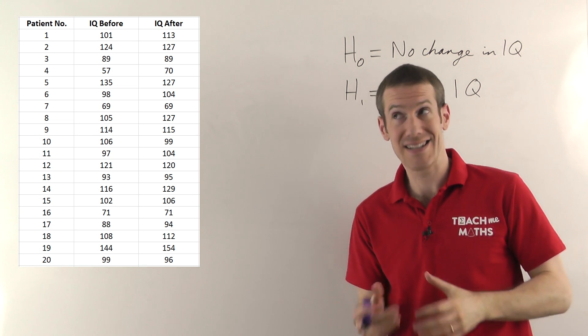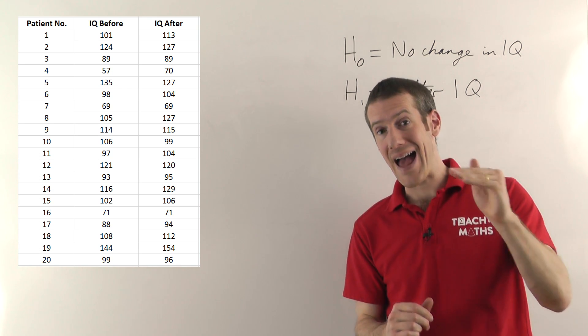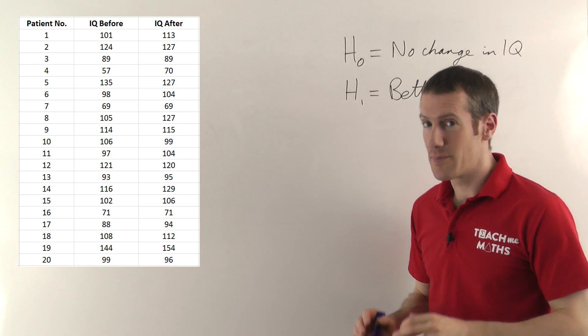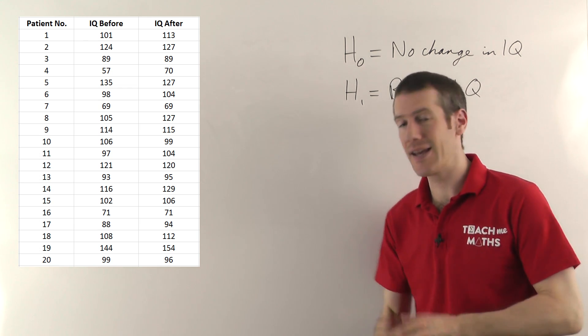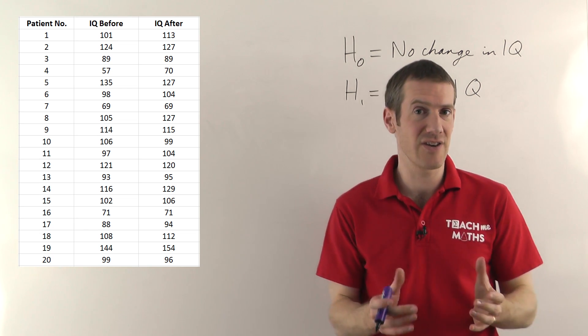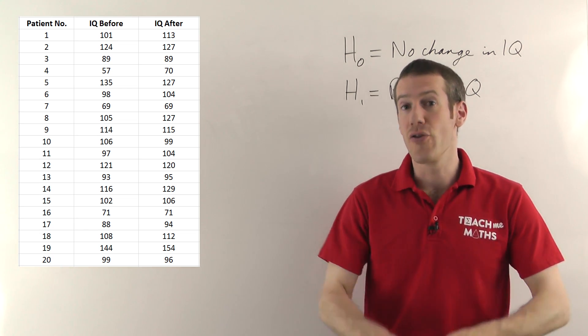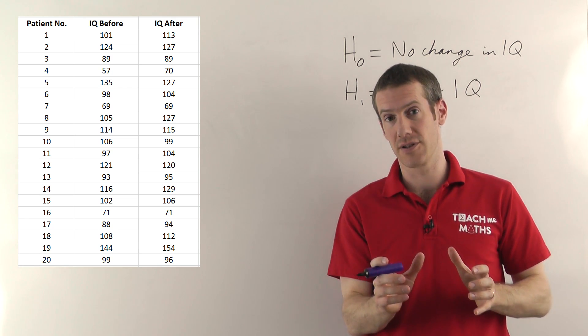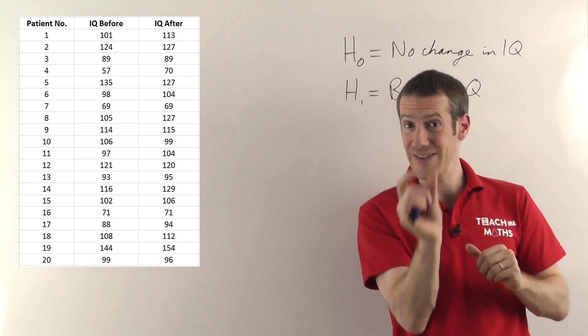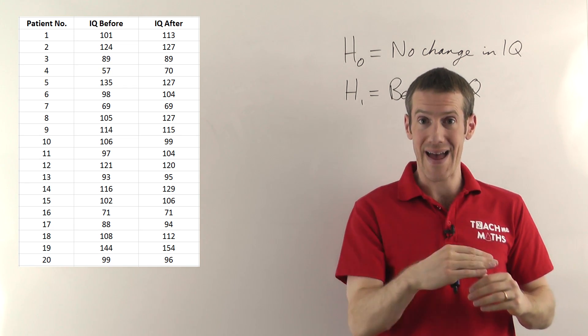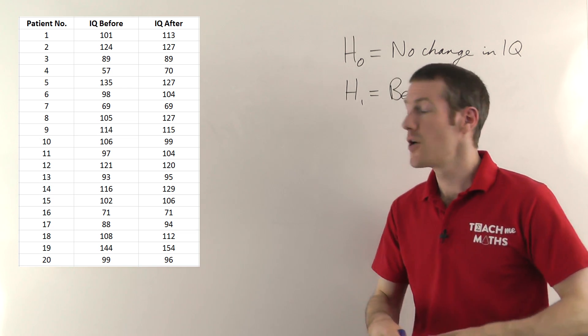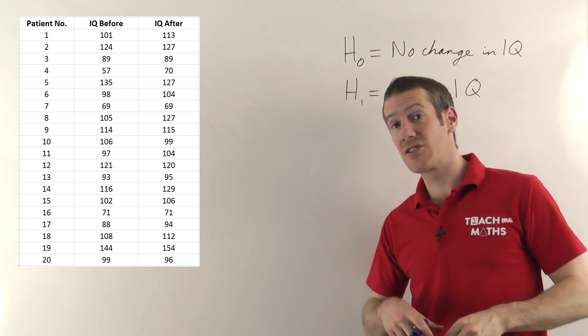If the mean IQ after we gave them the drug has improved significantly from the mean IQ before they took the drug. This is what we're going to use the t-test to compare - the mean after the drug with the mean before. But the important thing about paired t-test is that you have to calculate your different values, so the mean and the standard deviation things which we'll be using in a minute, on the differences between each of the results.